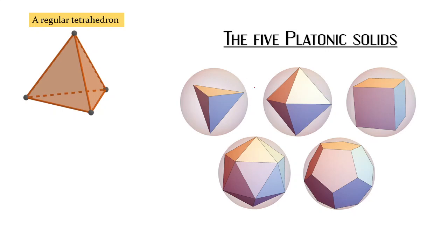They are highly interconnected and they have some number of vertices — let's call it V. For example, in a regular tetrahedron the number of vertices is four, and in a cube the number of vertices will be eight.